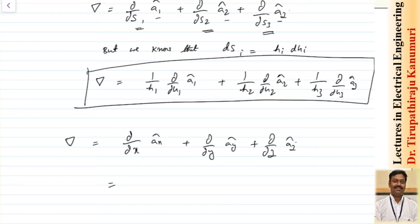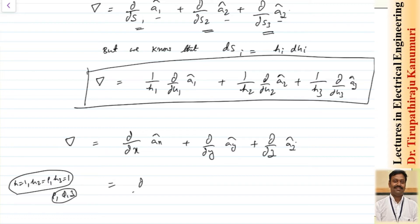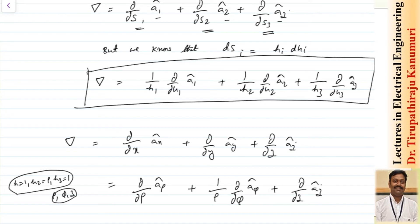Coming to the cylindrical coordinate system, we know h1 = 1, h2 = ρ, and h3 = 1. The different components are ρ, φ, and z. So this becomes ∂/∂ρ in the direction of a_ρ, plus 1/ρ · ∂/∂φ in the direction of a_φ, and the third component gives ∂/∂z in the direction of a_z. So this is how we calculate it.